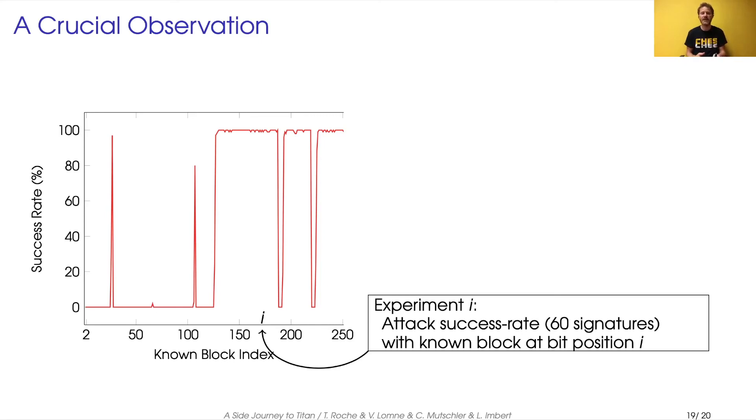And we can easily see that when the known bits are in the lower half of the nonces, then the success rate is low. And when it comes to the upper half, then it gets high. We observe that it actually follows the binary form of the curve order.